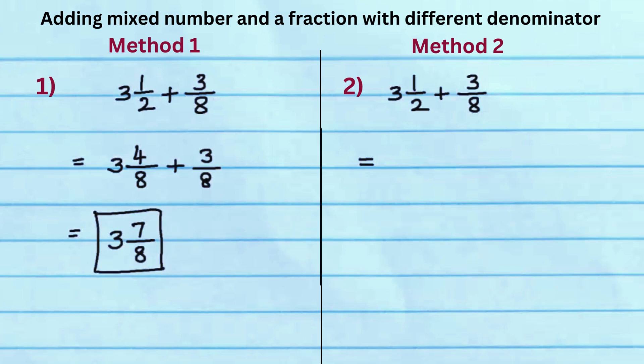In method 2, first convert the mixed fractions to improper fractions. Mixed fraction 3 and 1 half is rewritten as 7 over 2.